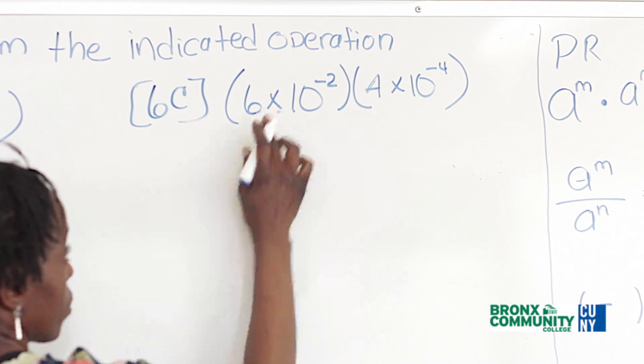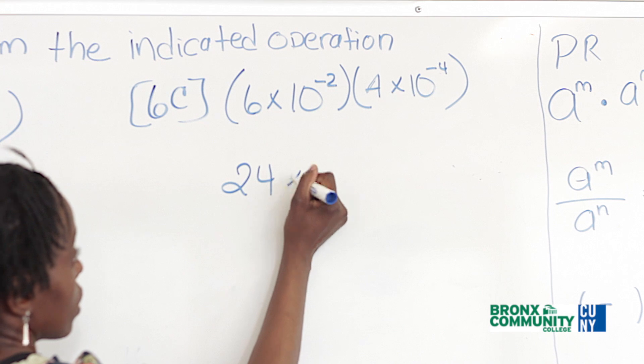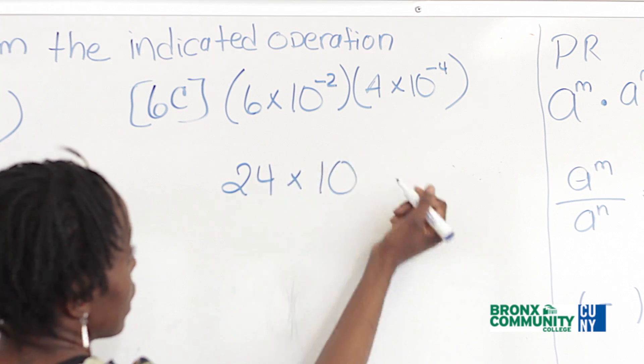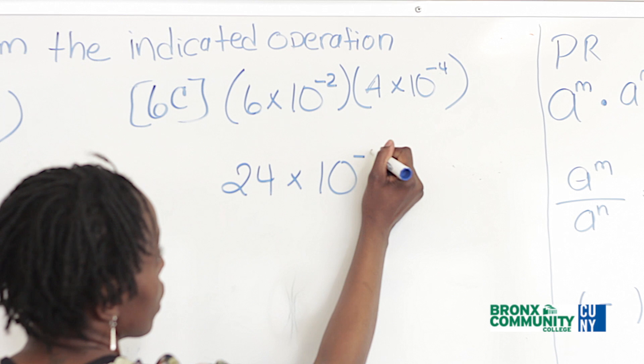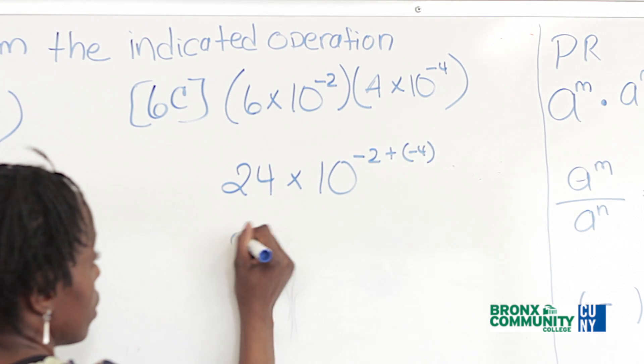So we multiply the numbers in the front, 6 times 4, we have 24 times 10. We add the exponents which we end up with negative 2 plus a negative 4, which gives us negative 6.